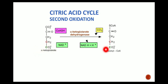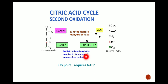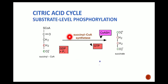In the second oxidation step, alpha-ketoglutarate is converted into succinyl coenzyme A. The substrate CoASH is used, and the catalyzing agent is alpha-ketoglutarate dehydrogenase. Decarboxylation also occurs — CO2 is liberated. This is an oxidative decarboxylation coupled to the formation of an energized molecule. Key point: requires NAD+.